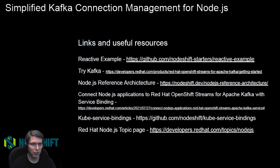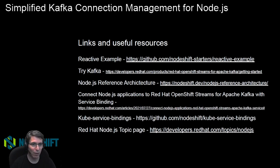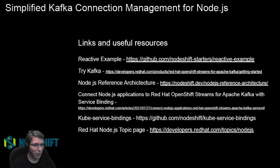The blog post also shows you how to do those connections by applying YAML and from the command line versus the UI. There's also the link to the kube-service-bindings module itself. And if you want to know what we're up to at Red Hat in terms of Node.js — the quick starts and guides we're putting together — you can go to the Node.js topics on developers.redhat.com. Thank you very much, and we hope to see you in another video.